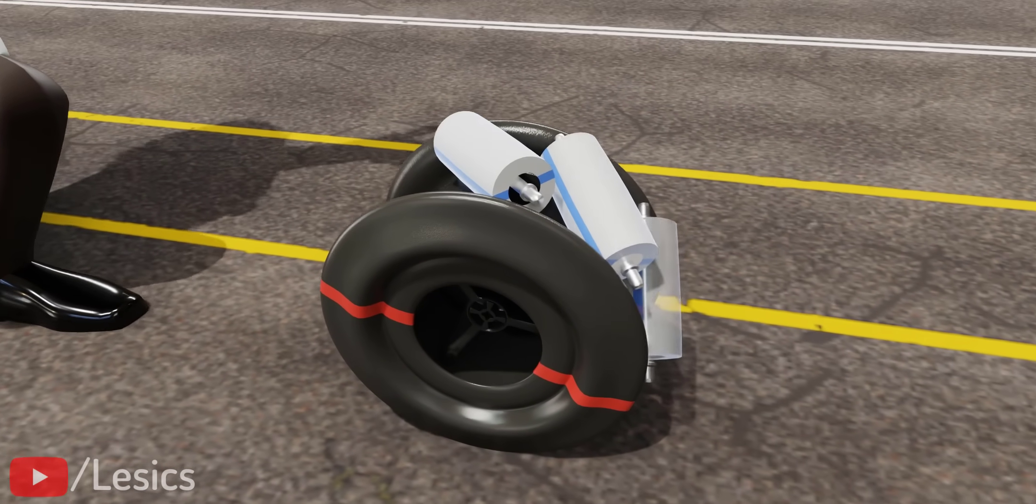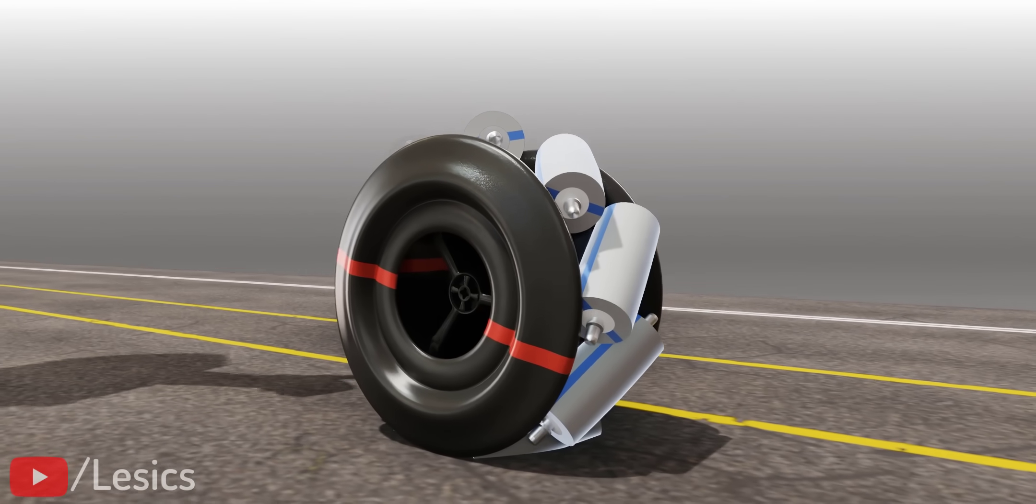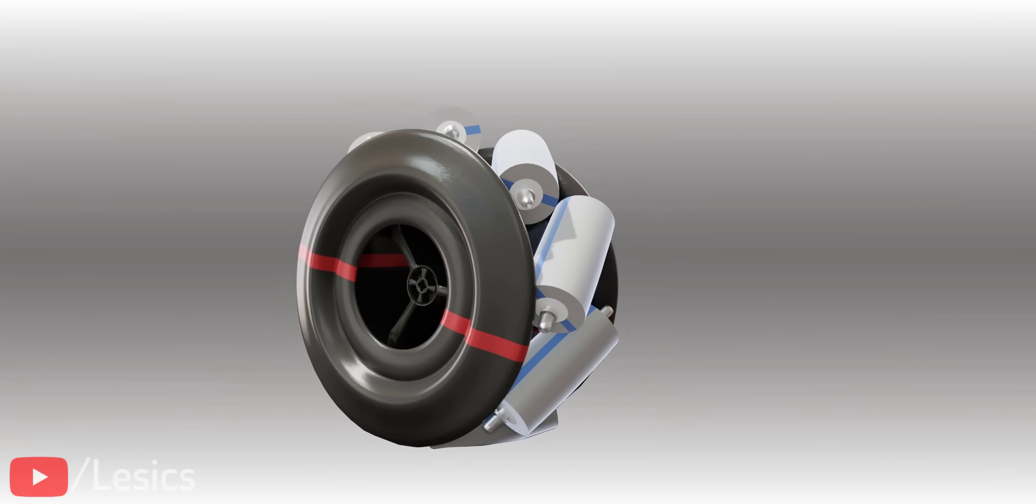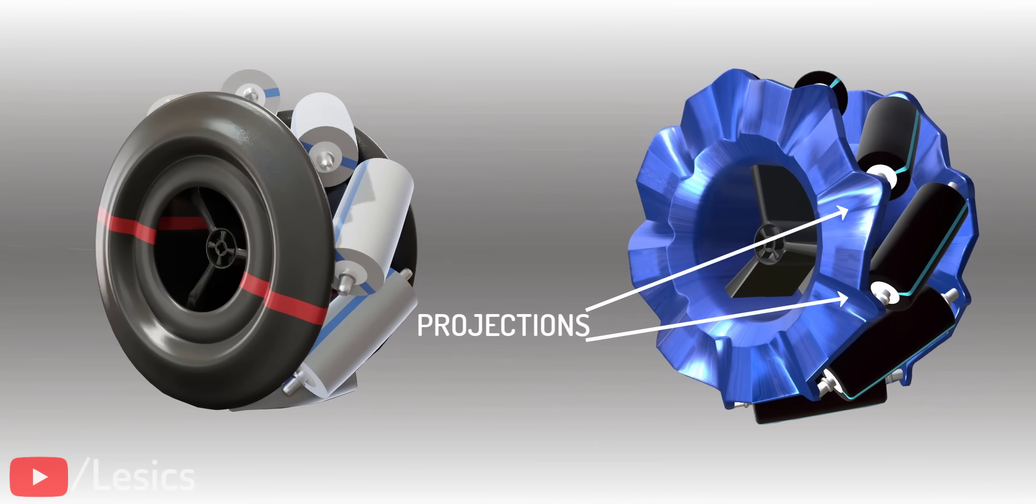He used many such free-to-rotate rollers throughout the periphery of the wheel. The side plates will properly hold the rollers, if you make some projections on them as shown.